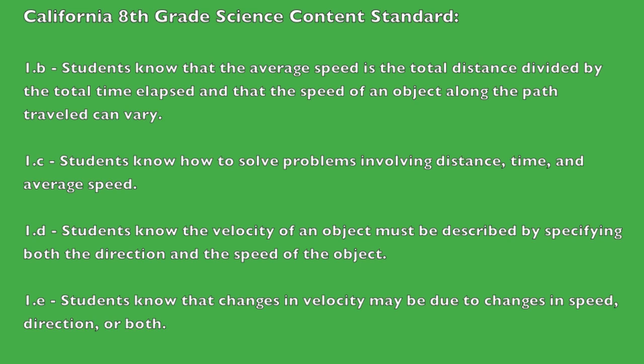This lesson covers California eighth grade science content standards 1b, which states that students know that the average speed is the total distance divided by the total time elapsed, and the speed of an object along the path traveled can vary. Standard 1c states that students know how to solve problems involving distance, time, and average speed.